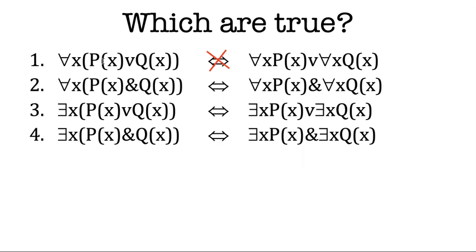What if it's the case that every object has property P or Q? It doesn't then follow that everything has P or everything has Q. That's not true. Let's just think of an example.